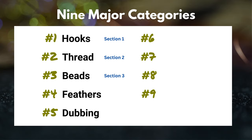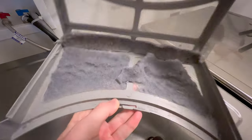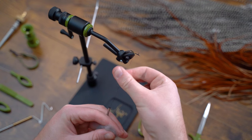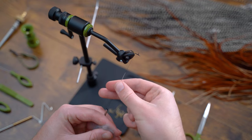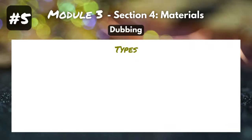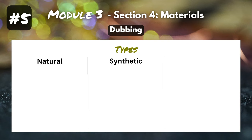Let's dive into category number five: dubbing. Dubbing is a word you're going to hear a ton in the fly tying world. If I had to explain what dubbing was to someone who had never seen it before, I would describe it as fancy dryer lint — that stuff you pull out of your dryer after a few loads. It's got a very similar texture and look, but it's definitely more complicated than that. Dubbing is used to create a dubbing noodle and wrap it onto your dry fly, nymph, or even streamers. There are three different types of dubbing: natural, synthetic, and a blend.